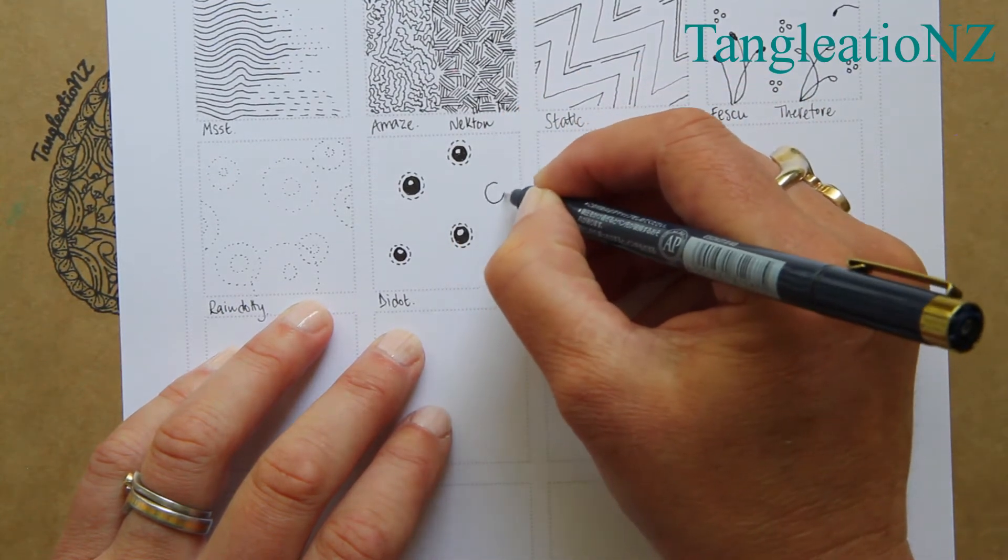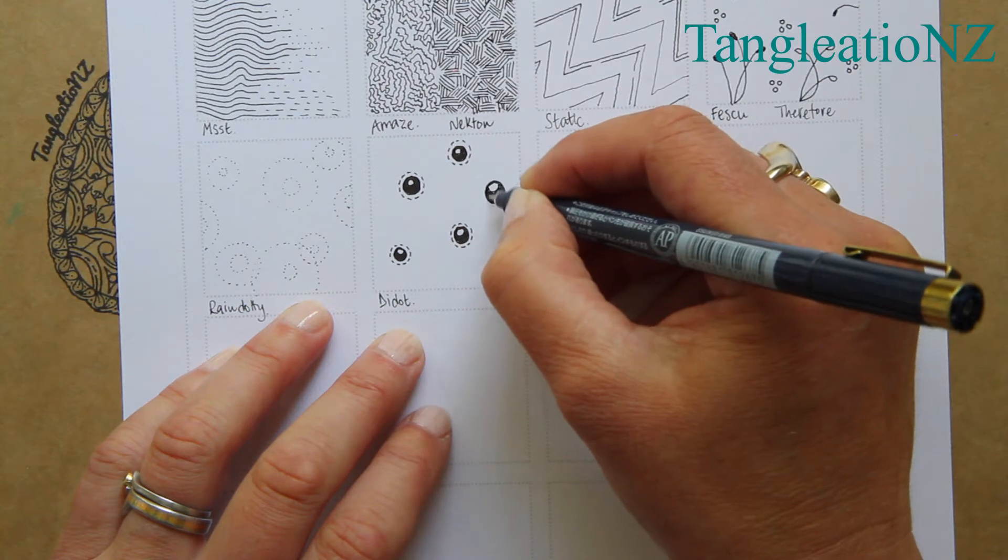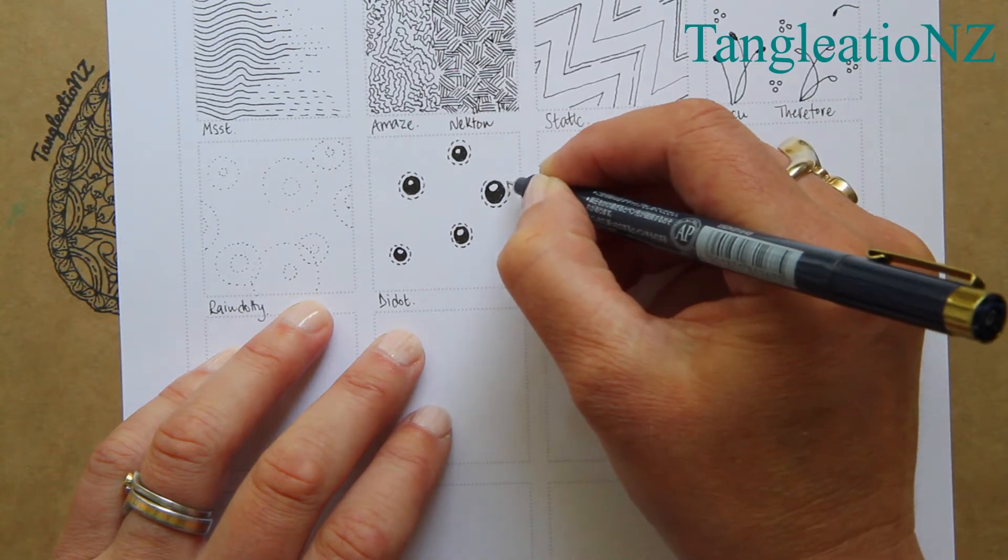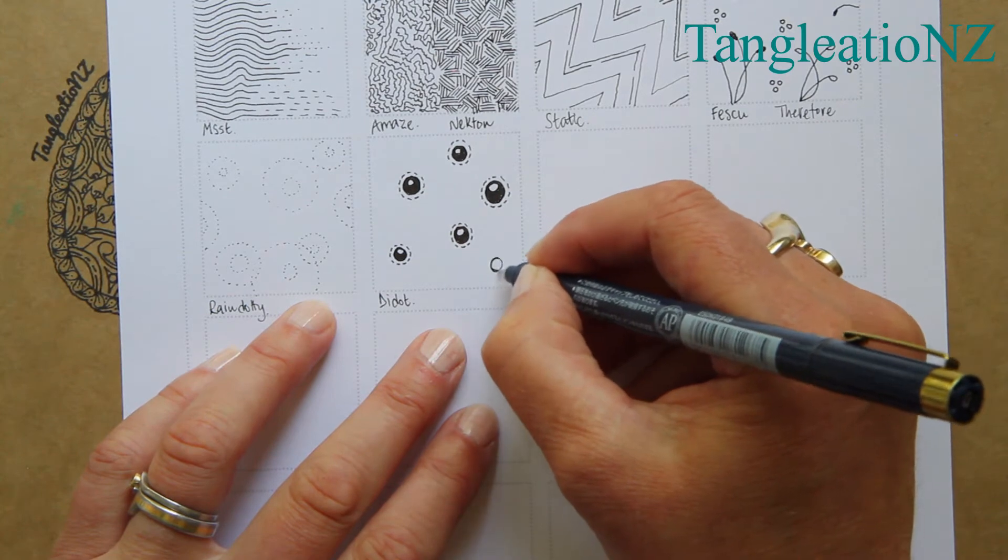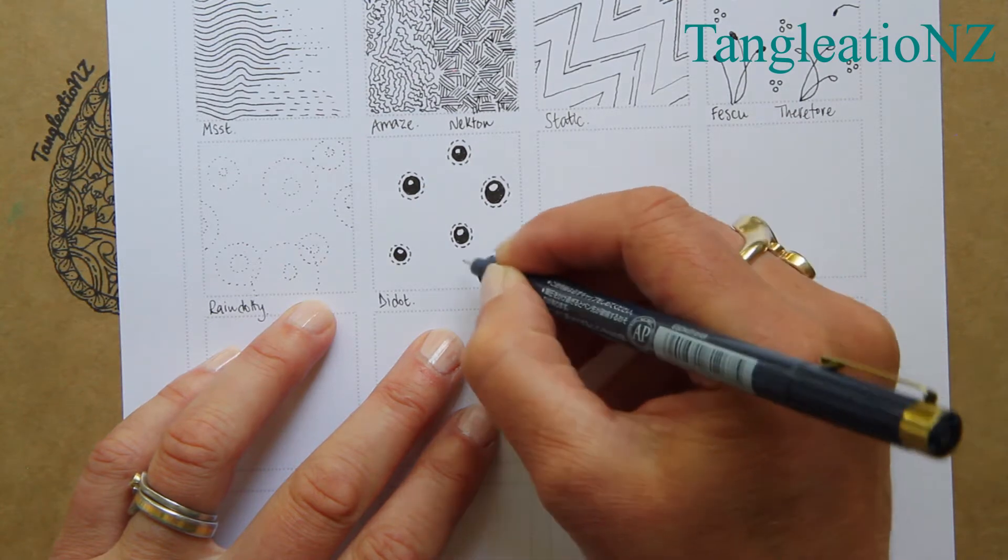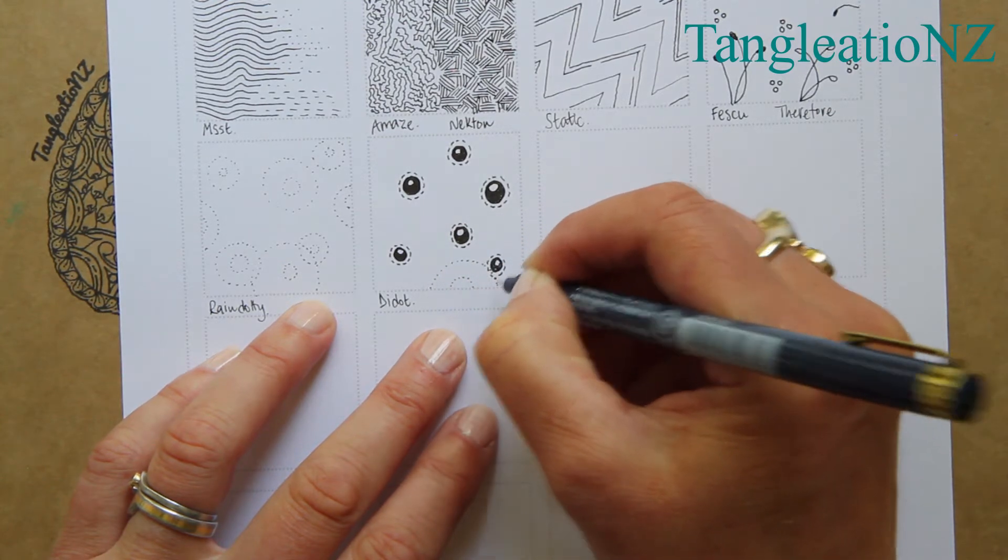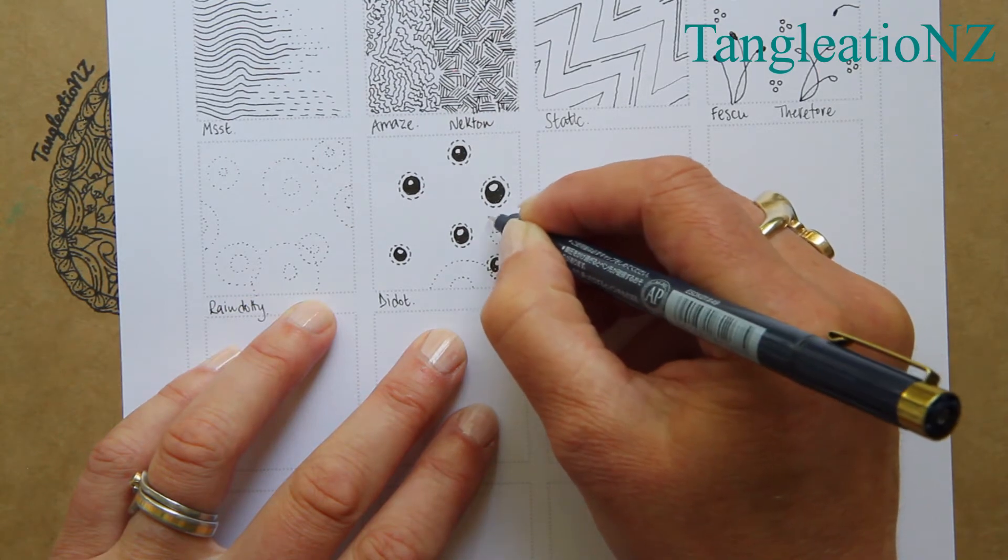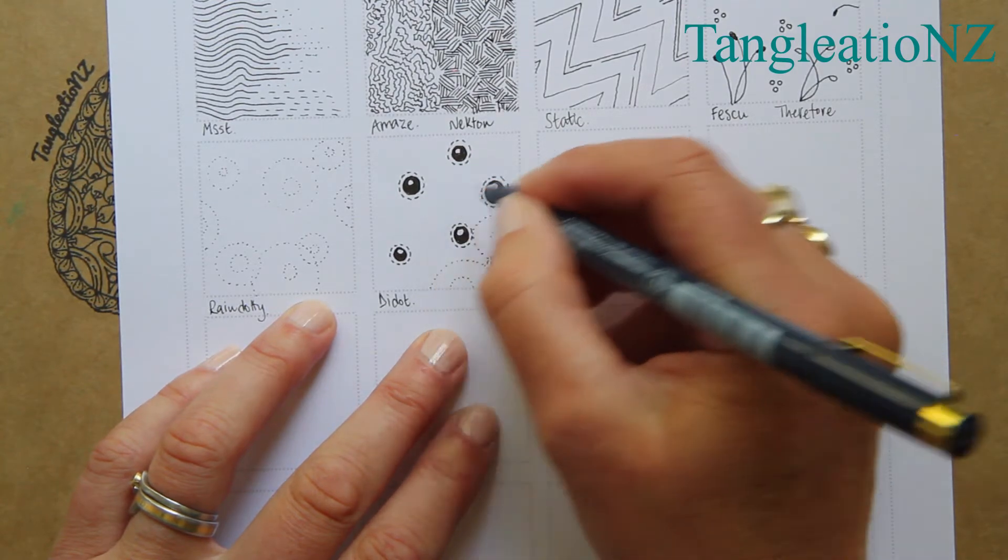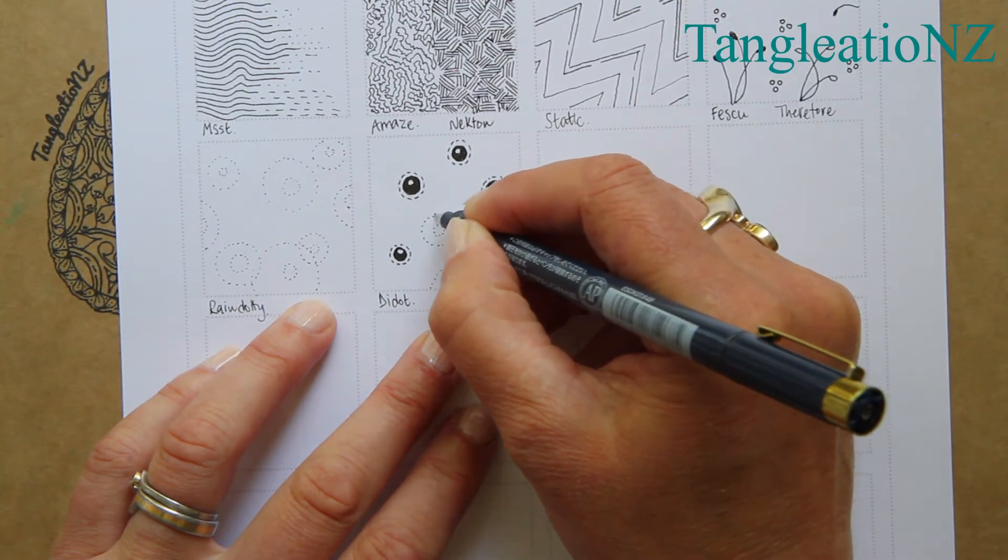You have solid black orbs and then a pathway that goes around each of those orbs. You can have a little bit of fun as a background technique. Sometimes the cousins play together—because Rain Dotty is a beautiful dot tangle, you can quite happily draw it over other tangles. Don't always think about one tangle, one section. Have a play and join them together.